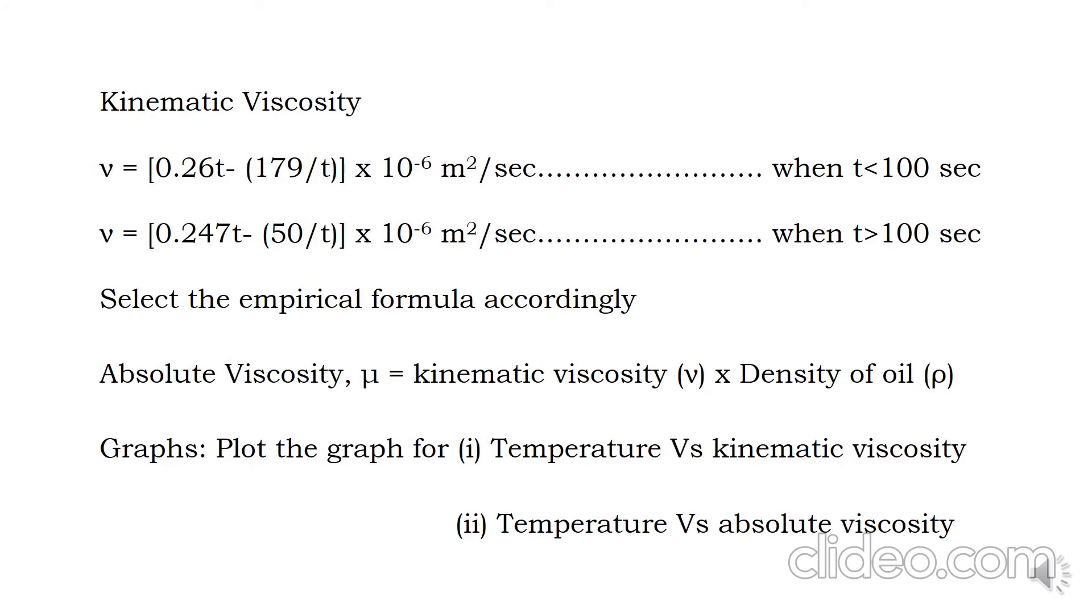We have two empirical formulas for kinematic viscosity based on the time required for collection of 50 cc of oil. If it is less than 100 seconds, use the first one. If greater than 100, use the second one. In our case, it is greater than 100, so we will use the second correlation.